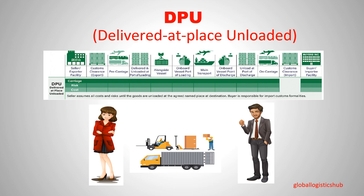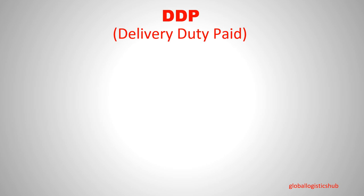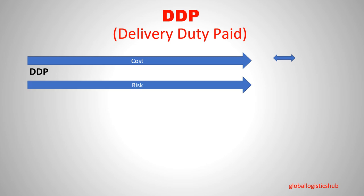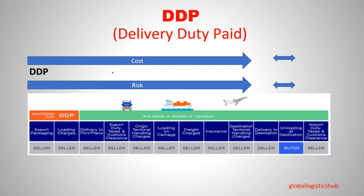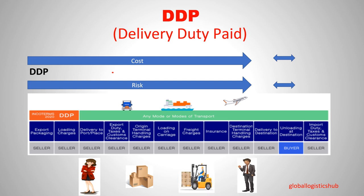Incoterm number seven is DDP, which means Delivered Duty Paid. Under DDP, the seller bears all costs and risks involved in delivering the goods to the selected place. It is the only term where the seller is liable for import customs fees. Risk transfers from seller to buyer at the place of unloading. The buyer is then responsible for unloading the goods. There is no obligation on the seller to insure the goods for pre-carriage or main carriage.